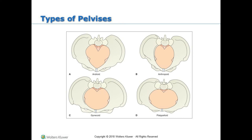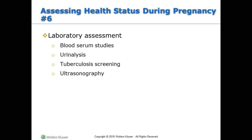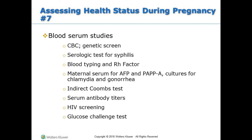Types of pelvises. Laboratory assessment includes blood serum studies, urinalysis, tuberculosis screening, and ultrasonography. Blood serum studies include: CBC, genetic screen, serologic test for syphilis, blood typing and Rh factor, maternal serum for AFP and PAPP-A, cultures for chlamydia and gonorrhea, indirect Coombs test, serum antibody titers, HIV screening, and glucose challenge test.